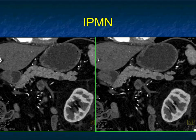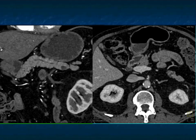Here's another example. You can see the pancreatic duct, and the lesion comes off the pancreatic duct. Again, it's about a centimeter in size — classic for IPMN. And again, this makes the point that the lesion is much easier to see on the coronal view rather than just the axial view.